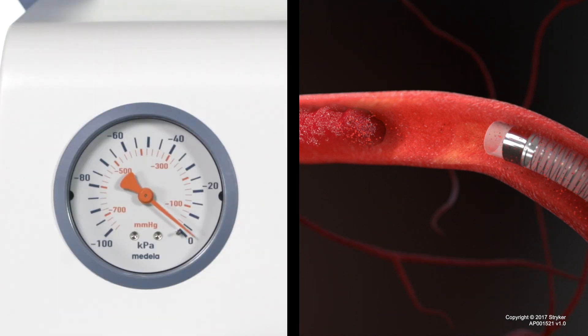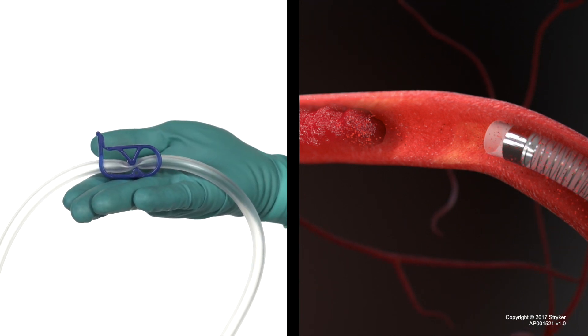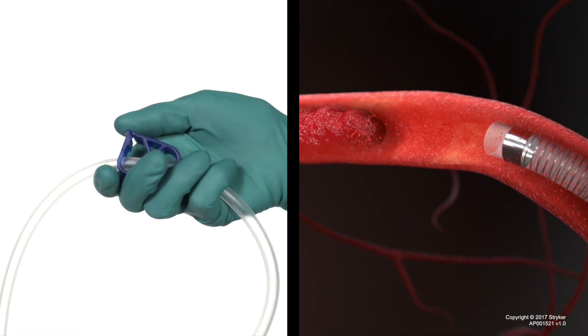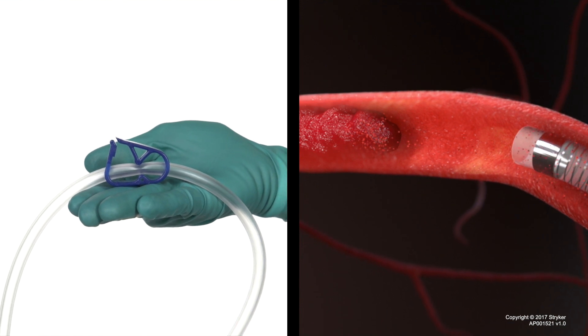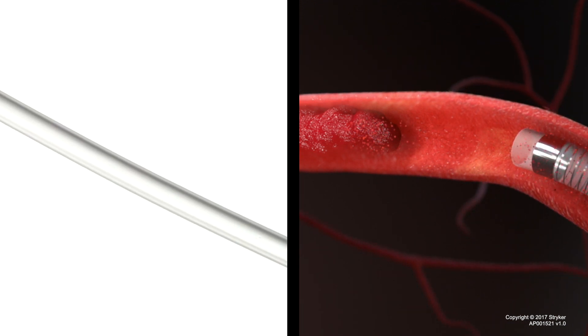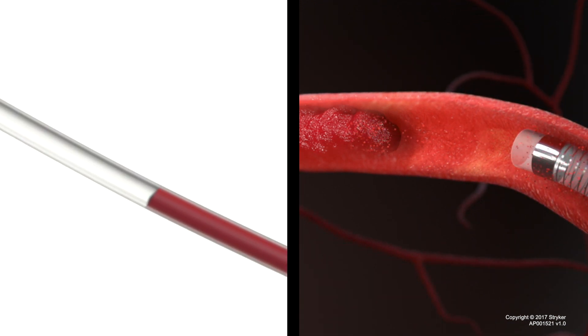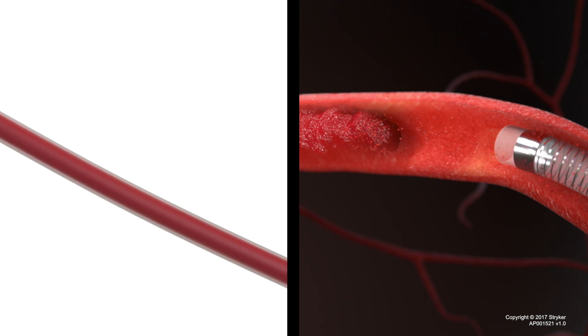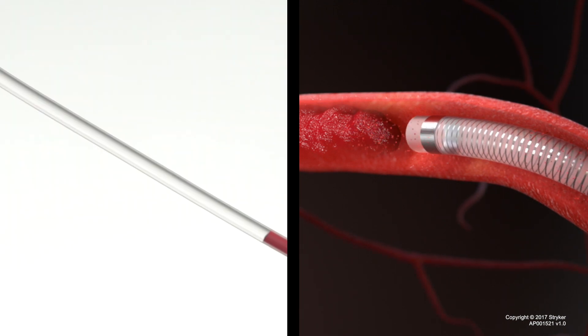The pump will begin to pump down until it reaches the maximum value as stated in the instructions for use. Check to ensure the tubing clamp is in the open position to begin aspiration. When you see blood flowing through the aspiration tubing, slowly advance the Catalyst Distal Access Catheter to engage the clot.